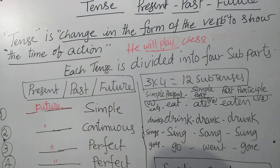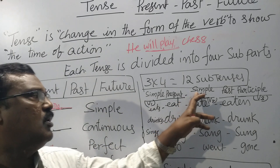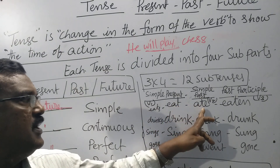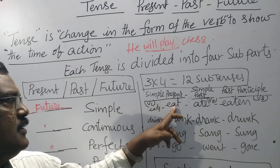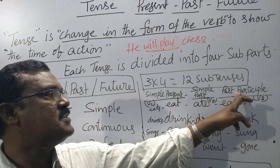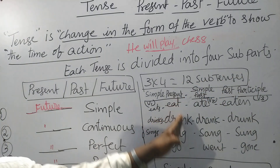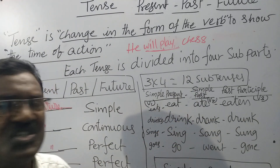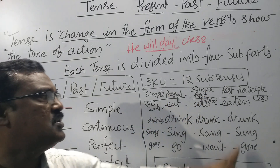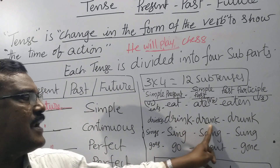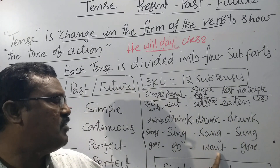Now, my dear students, in English language, if you want to understand a sentence, we have to give much importance to the verb. Verb is divided into three parts: eat, ate, eaten — called simple present, simple past, and past participle. There are thousands of verbs in English. We have to know the three forms: drink, drank, drunk; sing, sang, sung; go, went, gone.